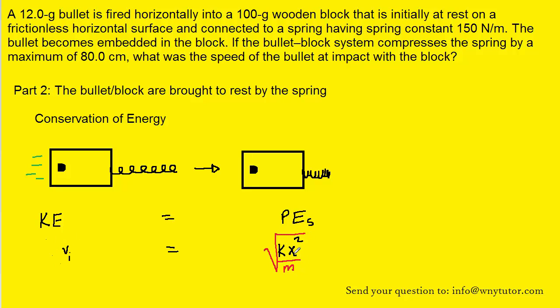Now, all of the values on the right side of this equation are known. k represents the spring constant, which was given to us as 150 newtons per meter. x represents the distance by which the spring was compressed, and that was given to us as 80 centimeters. Note that we'll have to convert that into meters in the equation, so that'll become 0.8 meters.